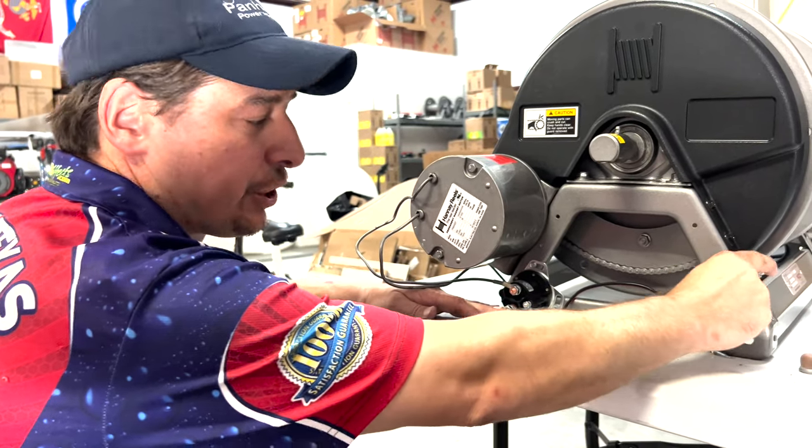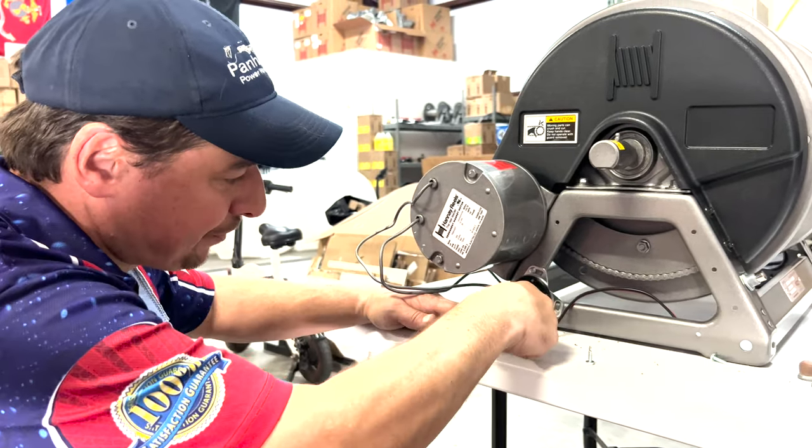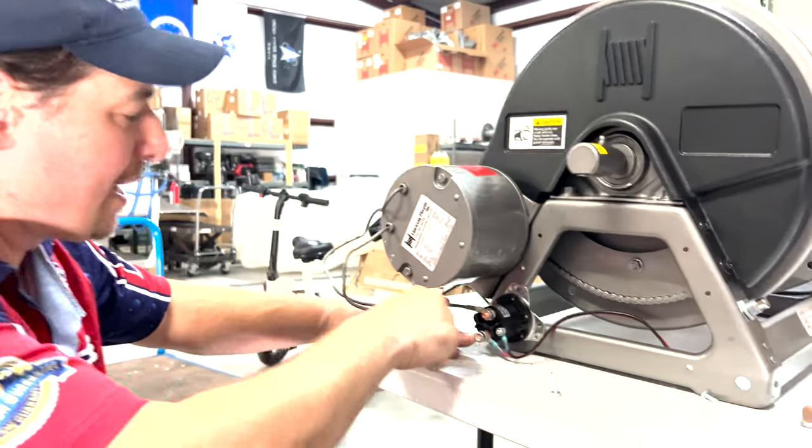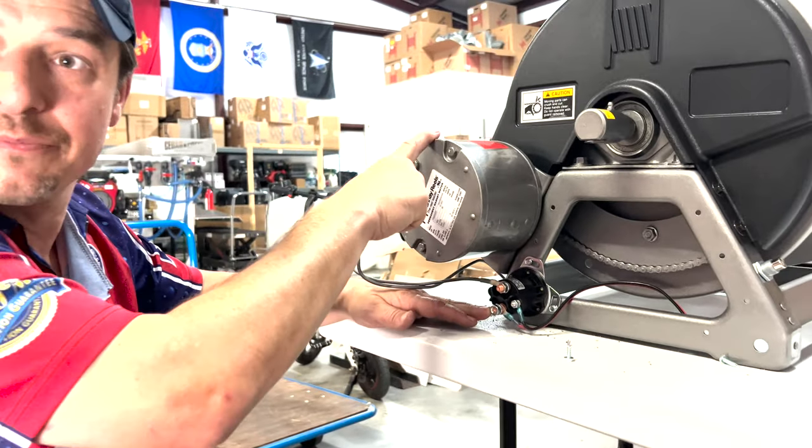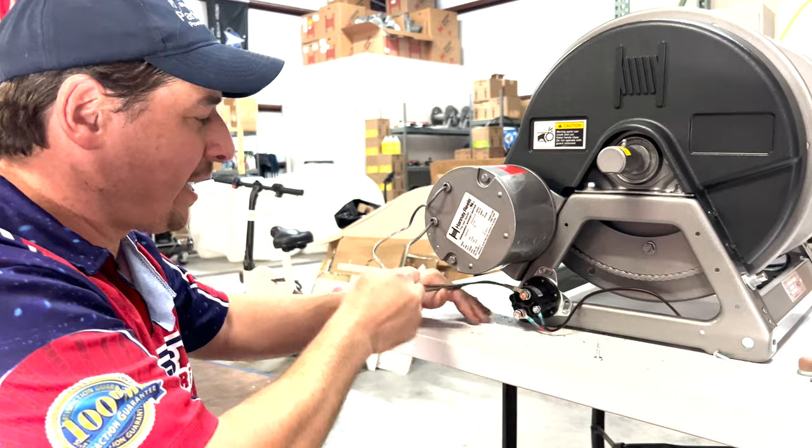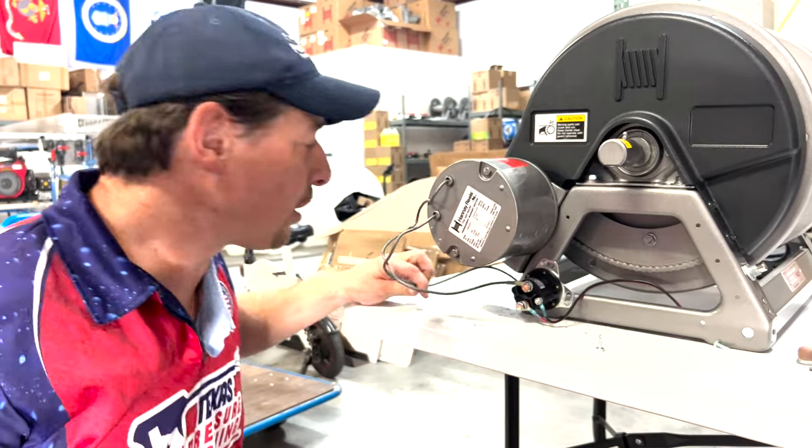We need to press the switch. It comes back through the black line, into the solenoid, and then to the motor. Our negative off the motor will then go to ground.